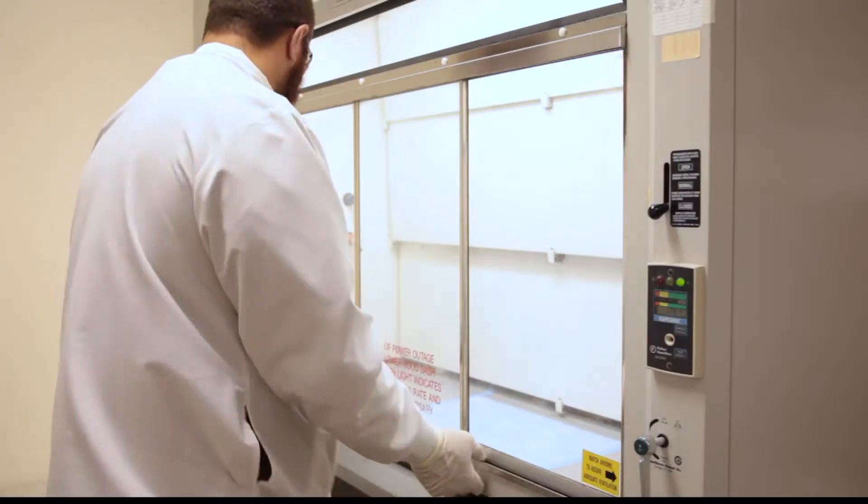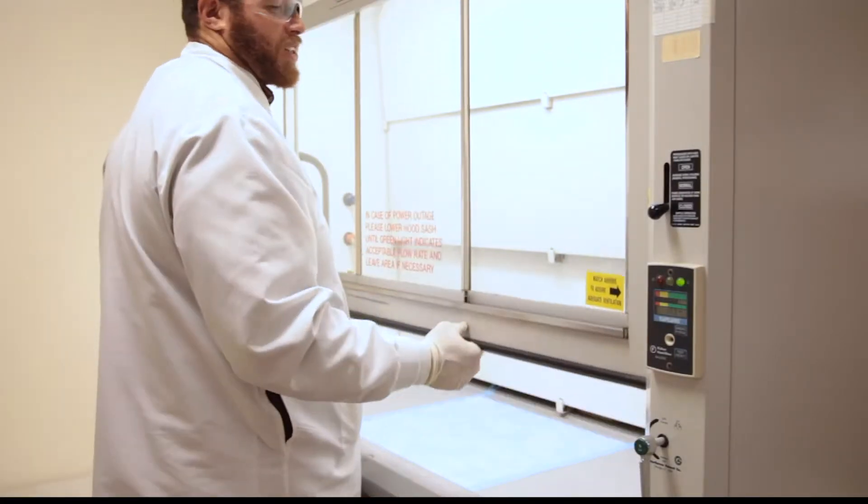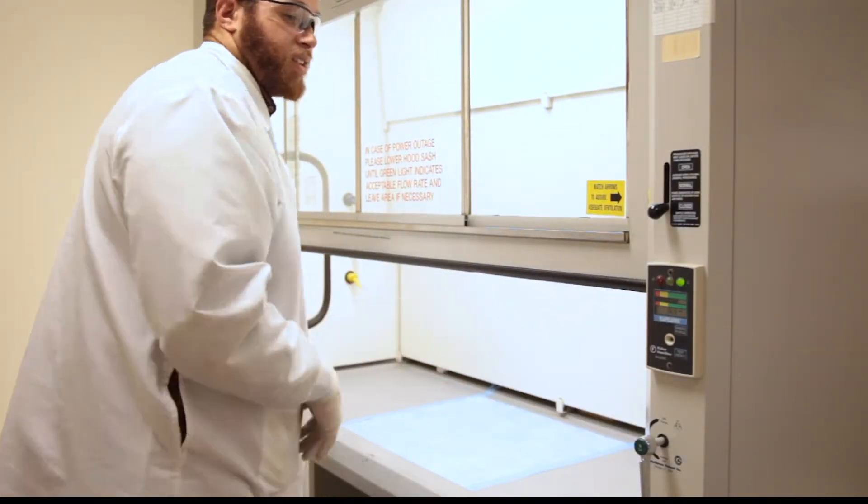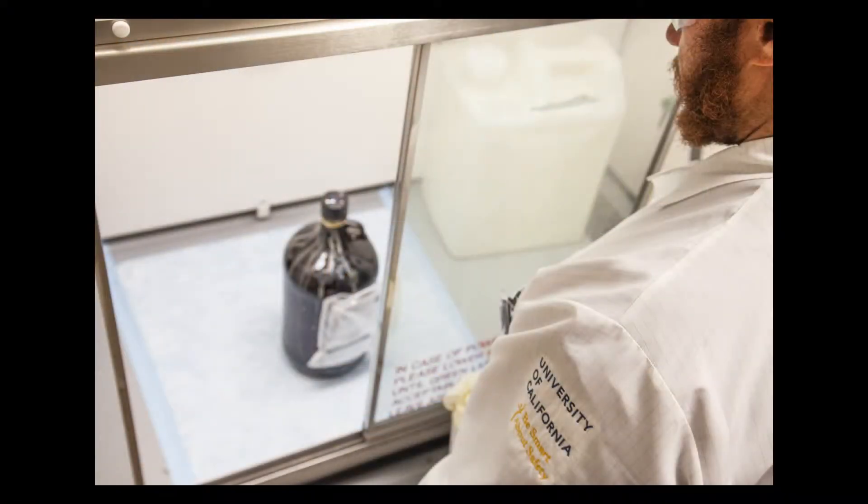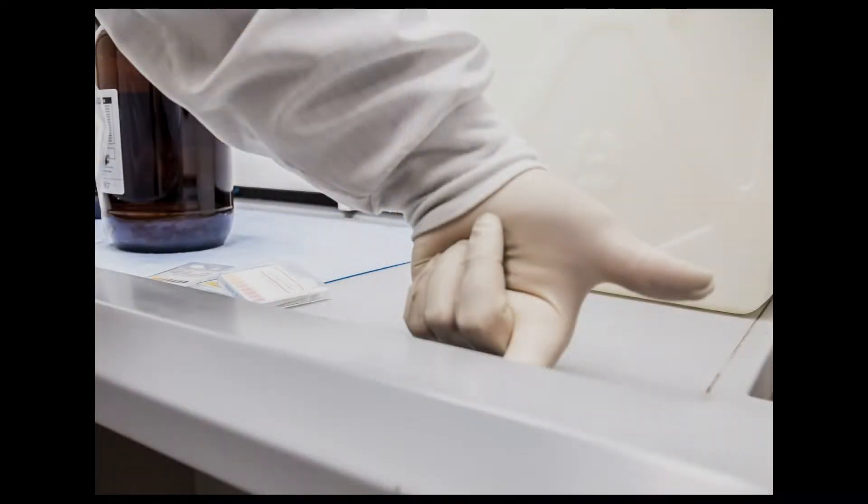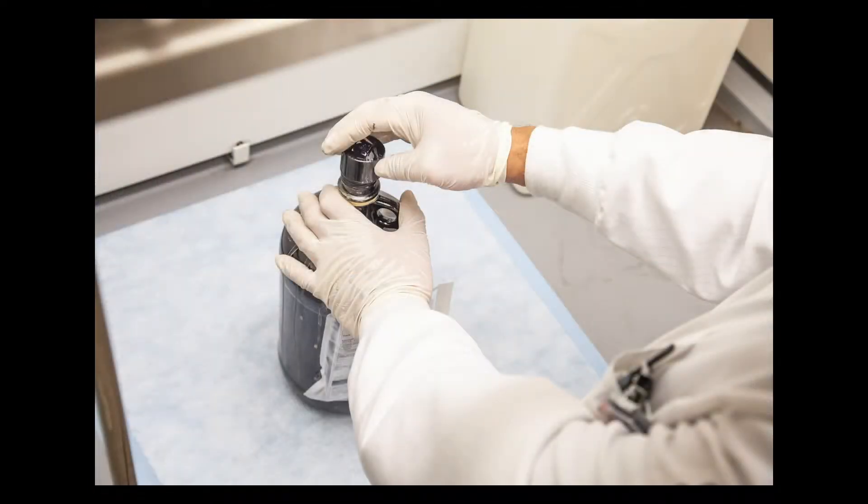An adjustable sash changes airflow across the hood to maximize capture of contaminants. The hood body is the visible part of the hood that contains the hazardous gases and vapors. The airfoil prevents turbulent air flows that can carry vapors out of the hood. And the work surface is where you perform your work.